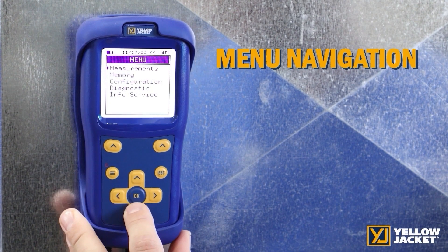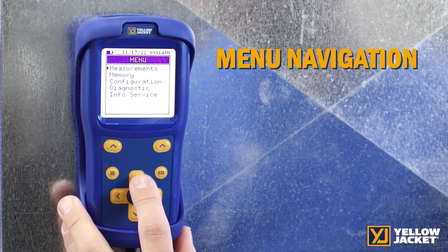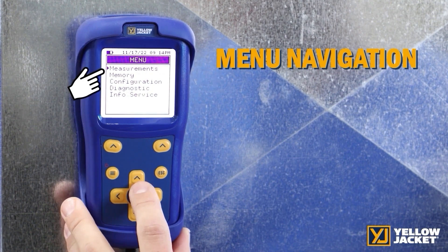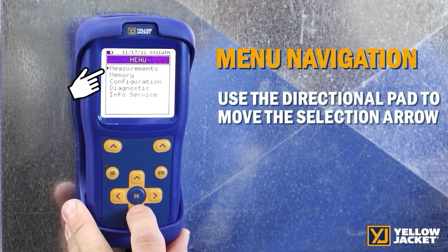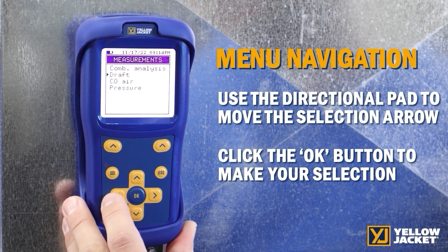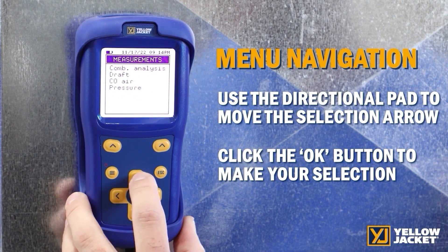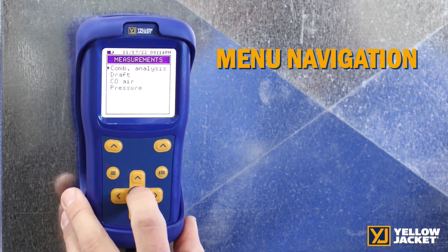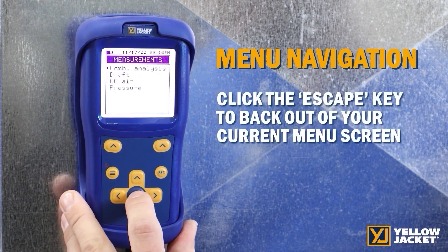The first menu is for measurements. When the arrow on the left side is pointing to measurements, click on the OK button in the center of the arrows on the touchpad. This will bring you to the measurement menu of options.